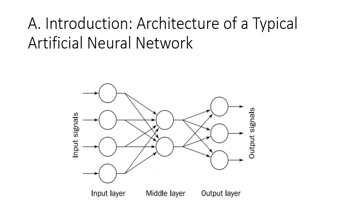This is an example of a typical ANN architecture. It has three layers: an input layer, a middle layer, and the output layer.